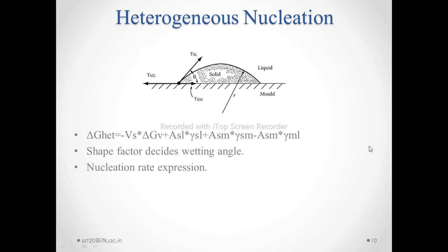In this slide, we are considering a very basic model — there is a nucleation at the wall of the container. This is a mold wall, and this is the nucleation. Theta is the wetting angle. This is the interfacial energy at the solid and liquid, and the interfacial free energy at the solid and the mold wall.